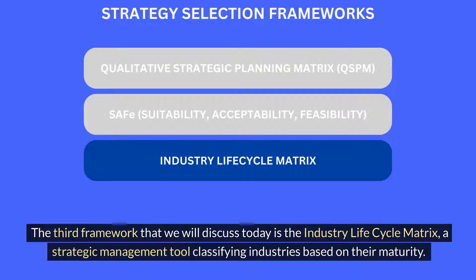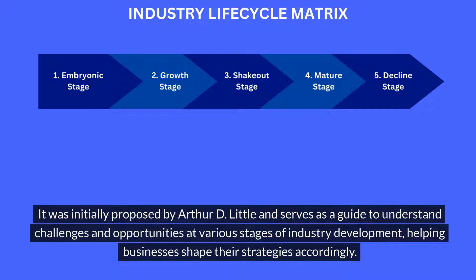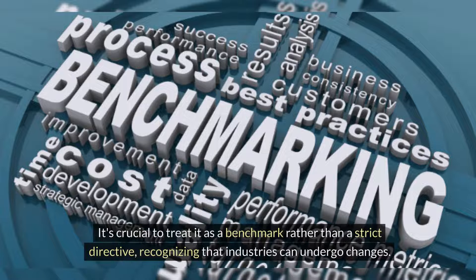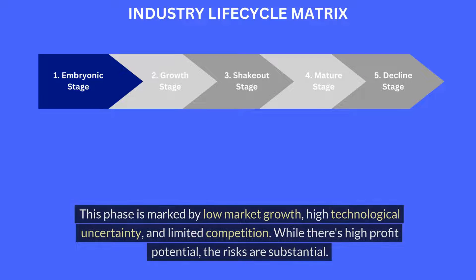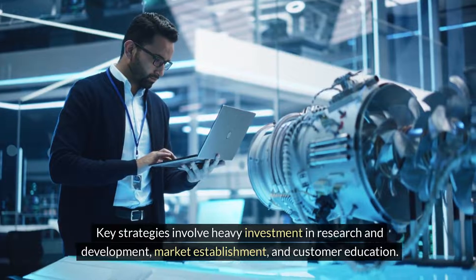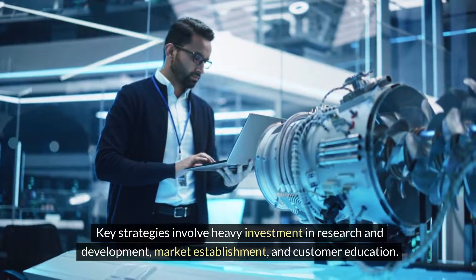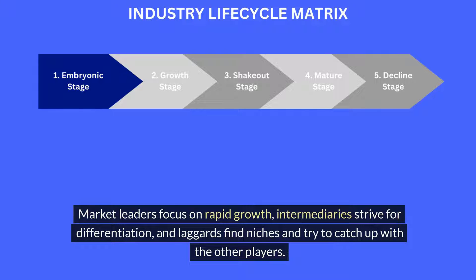The third framework is the Industry Life Cycle Matrix, a strategic management tool classifying industries based on their maturity, initially proposed by Arthur D. Little. It serves as a guide to understand challenges and opportunities at various stages of industry development, helping businesses shape their strategies accordingly — it should be treated as a benchmark rather than a strict directive. The first stage, the embryonic stage, is marked by low market growth, high technological uncertainty, and limited competition. While there's high profit potential, the risks are substantial. Key strategies involve heavy investment in research and development, market establishment, and customer education. Market leaders focus on rapid growth, intermediaries strive for differentiation, and laggards find niches and try to catch up.